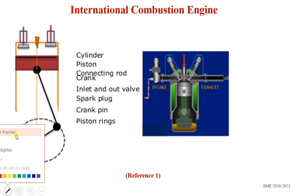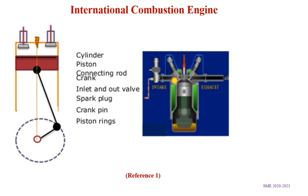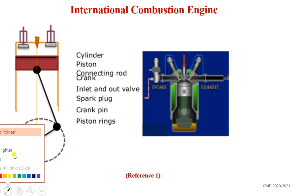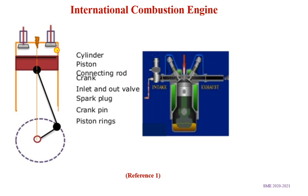The various parts shown are: the cylinder, which is this whole part; the piston; the connecting rod; the crank; inlet and outlet valves; the crank pin; piston rings, shown in black; and the spark plug. The spark plug is present in petrol engines — for diesel engines we will see that in the next slide.